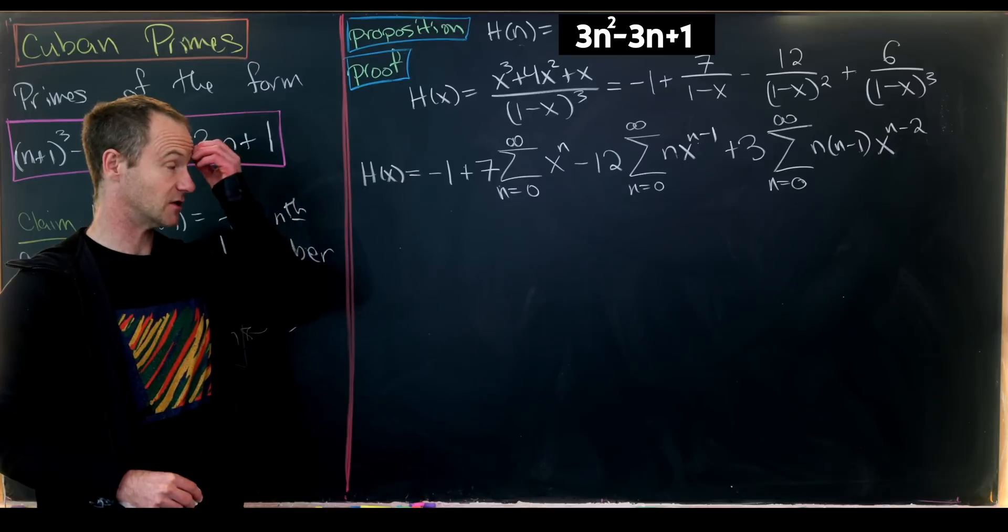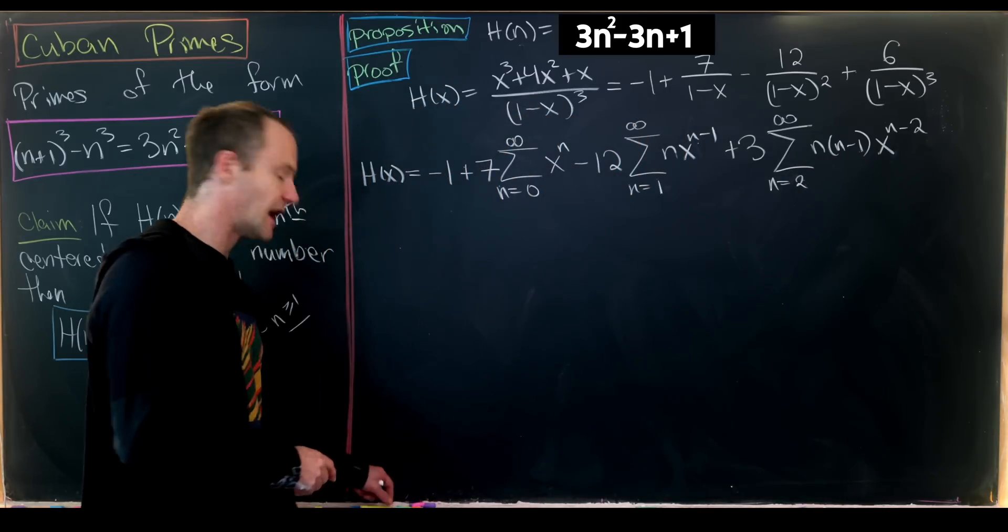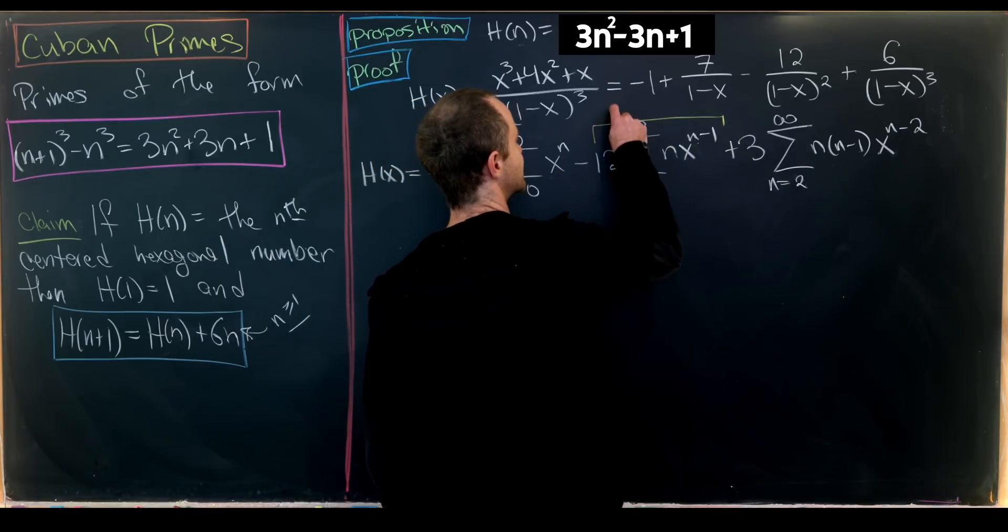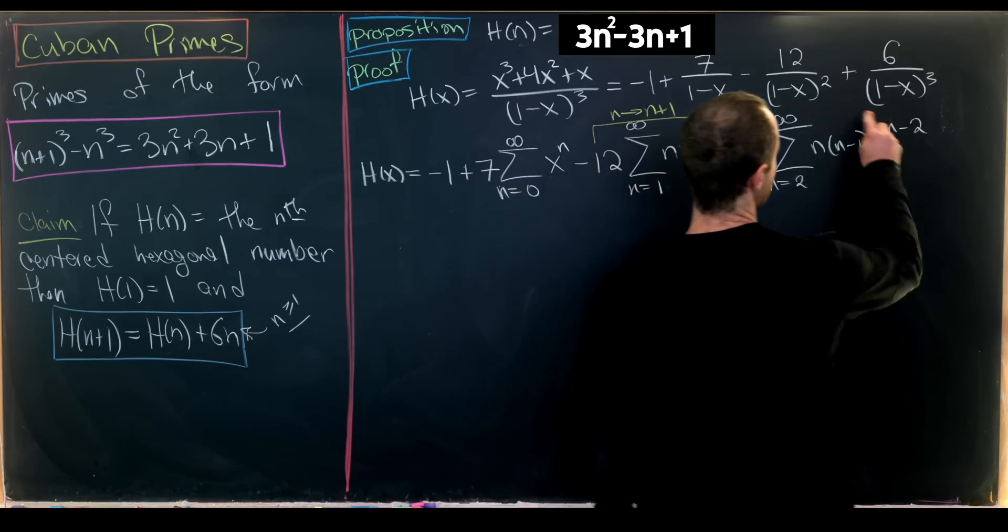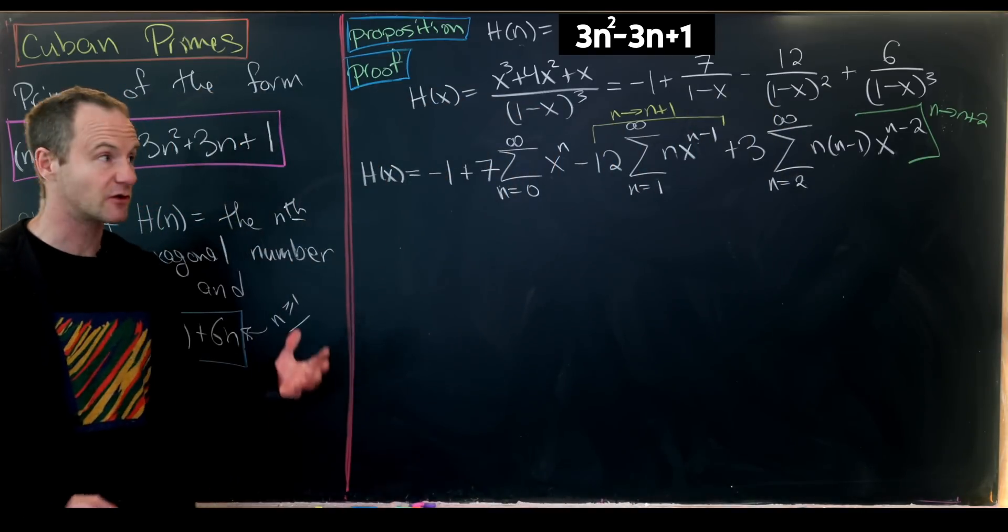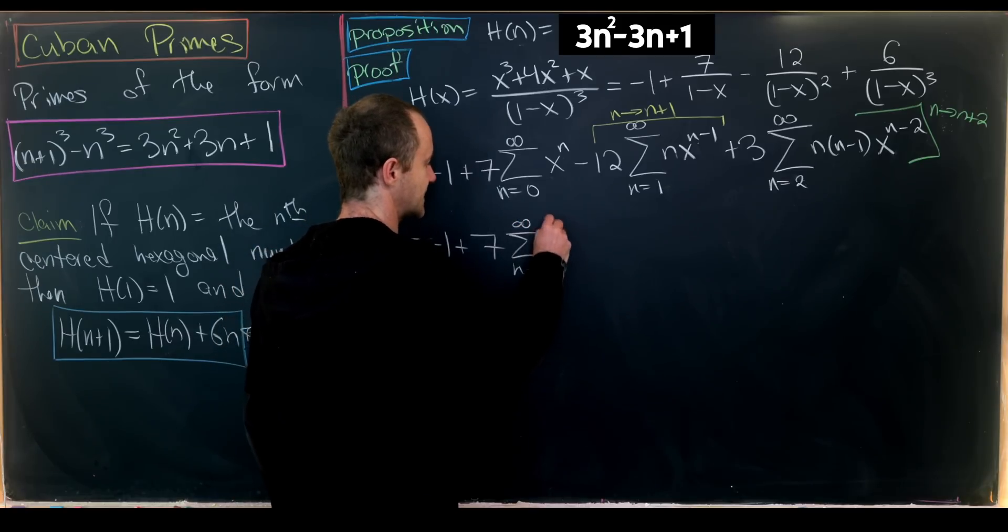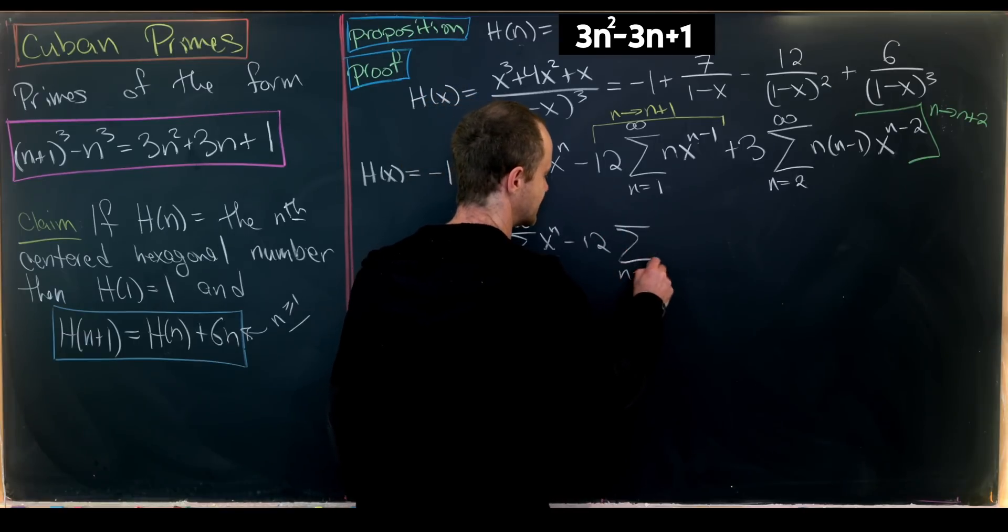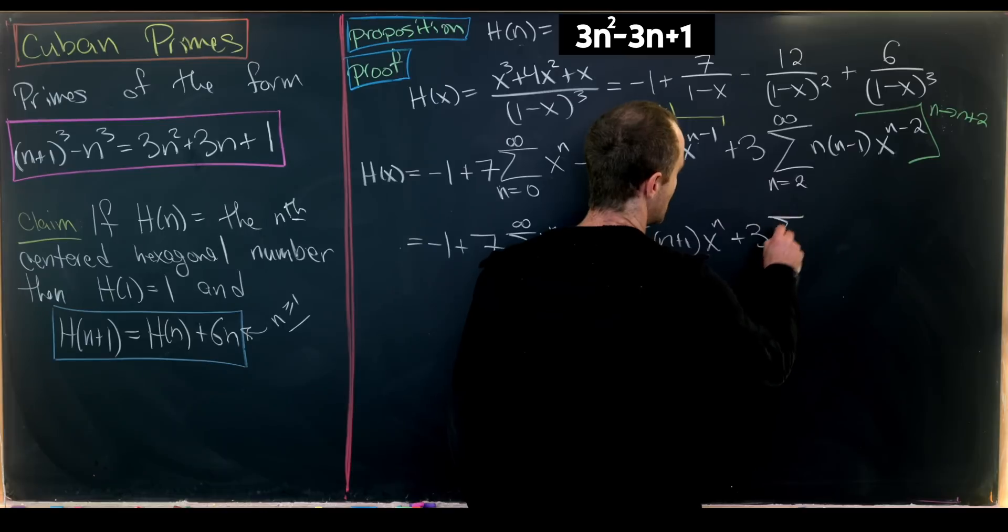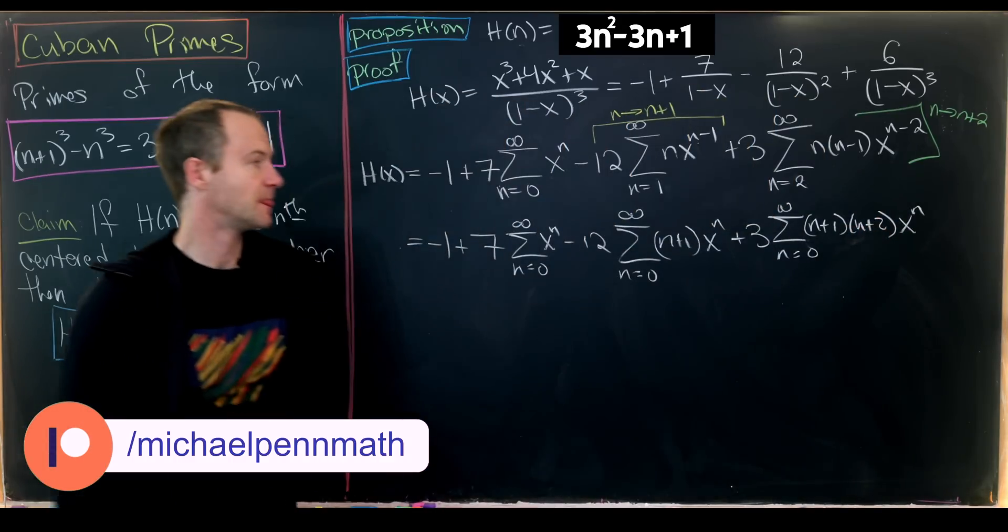We can start certain sums at higher indices since earlier terms are 0. Then we re-index so everything is x^n: replace n with n+1 in the first sum and n+2 in the second. This gives -1 + 7·Σ(n=0 to ∞) x^n - 12·Σ(n=0 to ∞)(n+1)x^n + 3·Σ(n=0 to ∞)(n+1)(n+2)x^n.